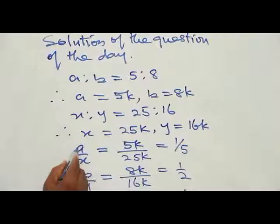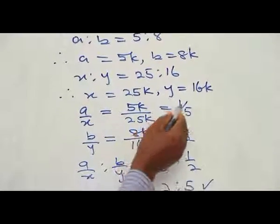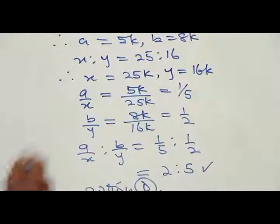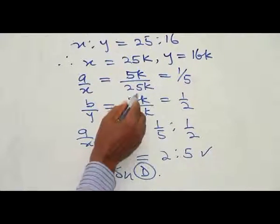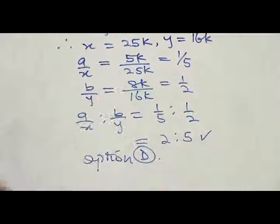Now, our a over x means 5K over 25K which reduces to 1 over 5. Our b over y becomes 8K over 16K which becomes 1 over 2, that is a half.